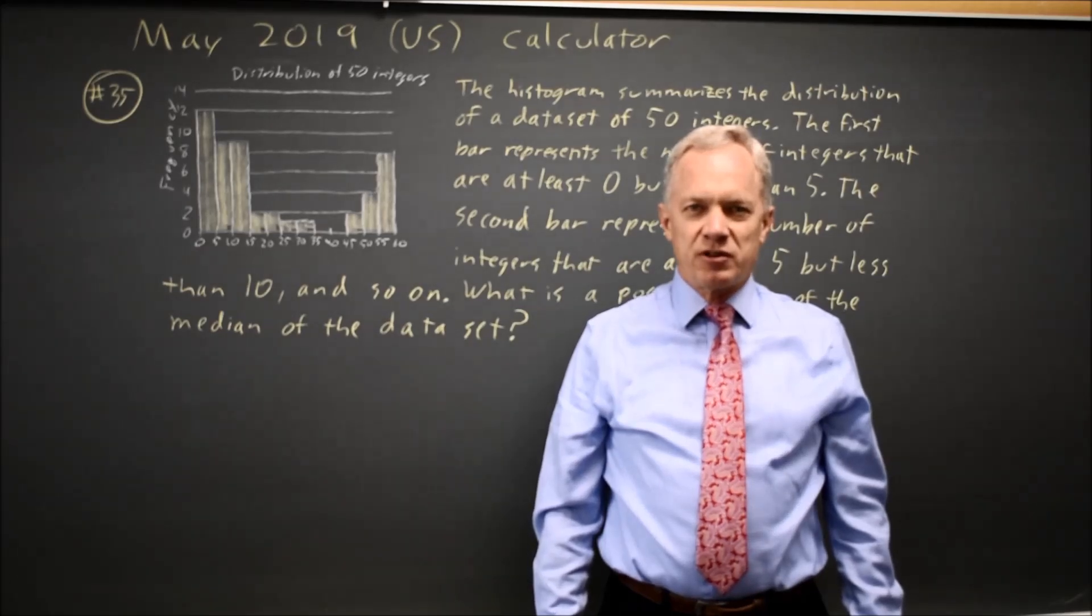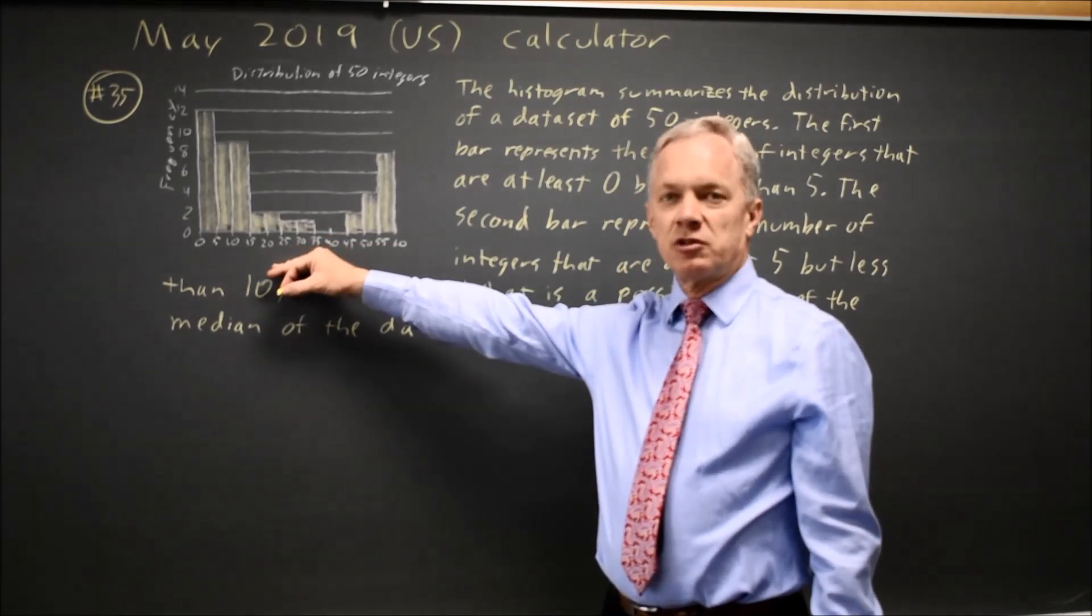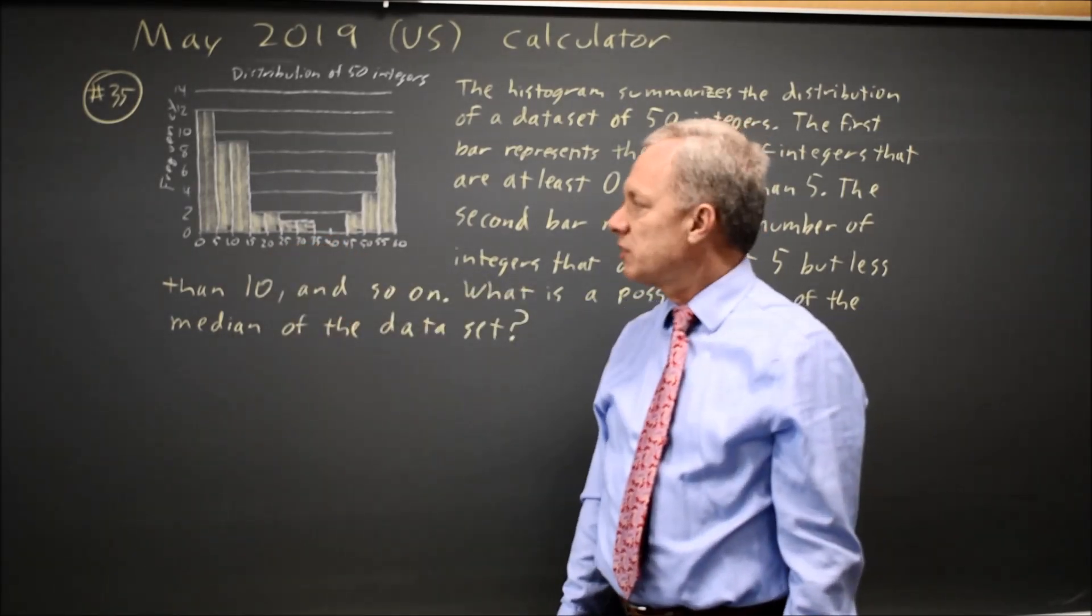This is calculator question number 35. College Board gives us a histogram, and they tell us that this is a distribution of integers, 50 integers, and they ask for the median.